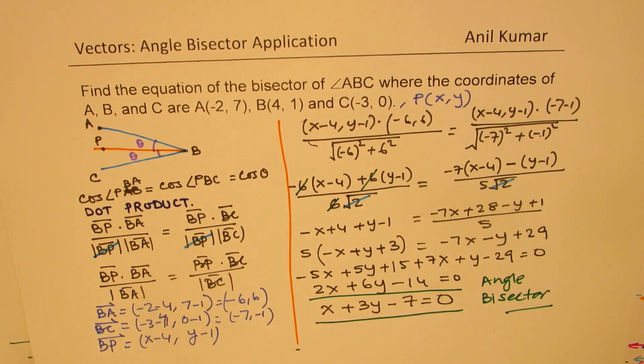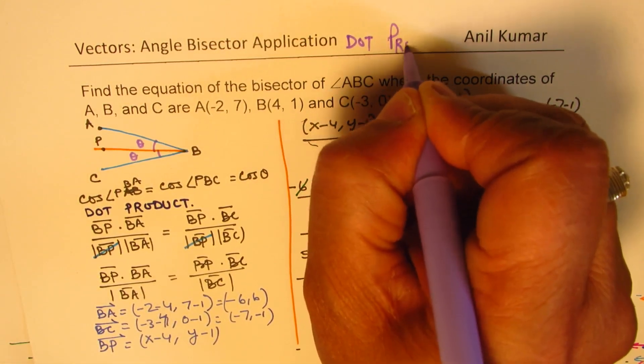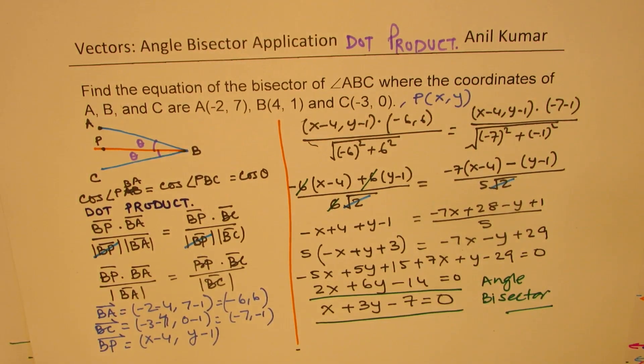So, the idea here is to find angle bisector, we could use a dot product. This is a huge application of dot product. Perfect. Feel free to write a comment, share your views, and if you like and subscribe to my videos, that would be great. Thanks for watching, and all the best.